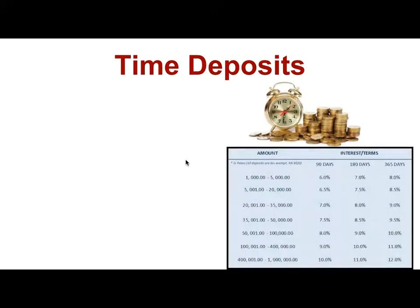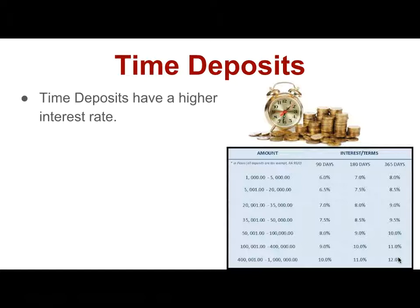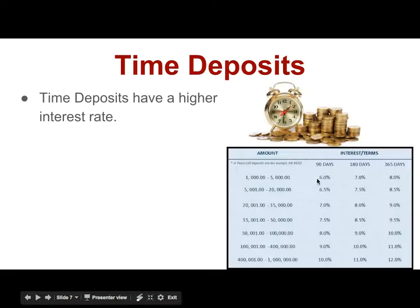A time deposit, also called a CD — Certificate of Deposit — has the advantage of the highest interest rate of the three. Interest rates might go as high as 12%, but 12% is going to cost you a lot to get that rate. More typical would be in the range of 6% to 8% on smaller deposits. But 6% — that's a good return. You're never going to get 6% on a money market. 8% is a pretty great return. But there are disadvantages with this option.